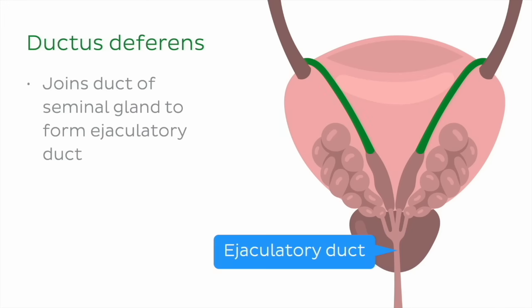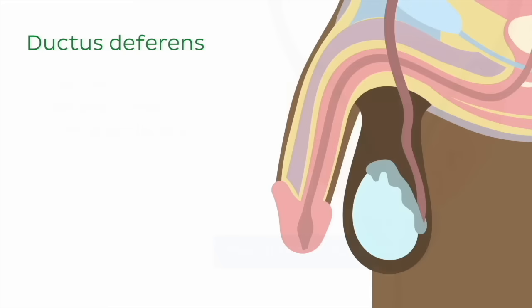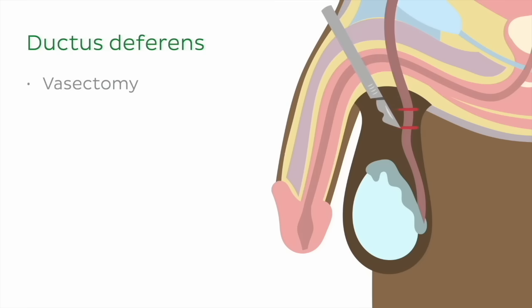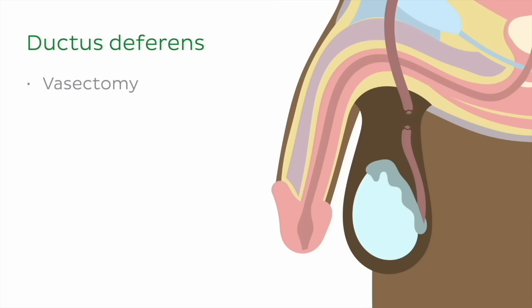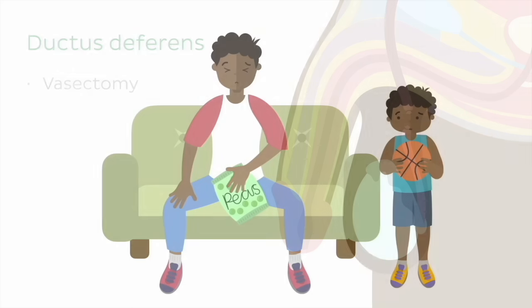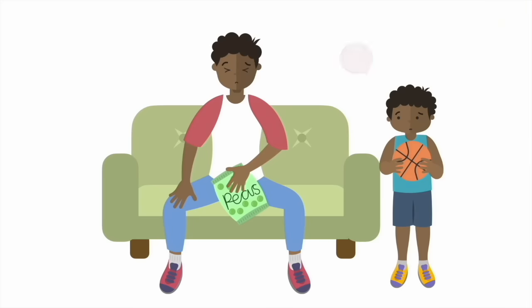You may have heard of a vasectomy procedure that sterilizes males. This involves cutting and removing part of the ductus deferens, tying off both ends, and often culminates in recovering on the couch with a frozen bag of peas.